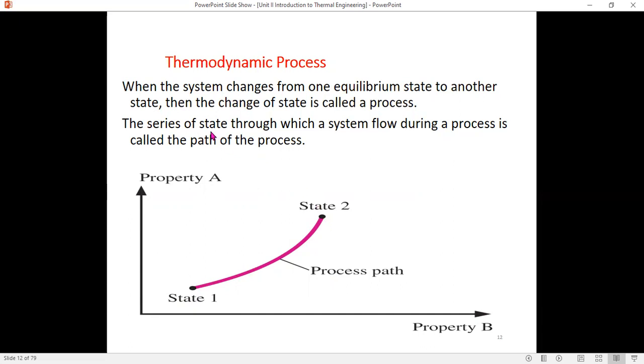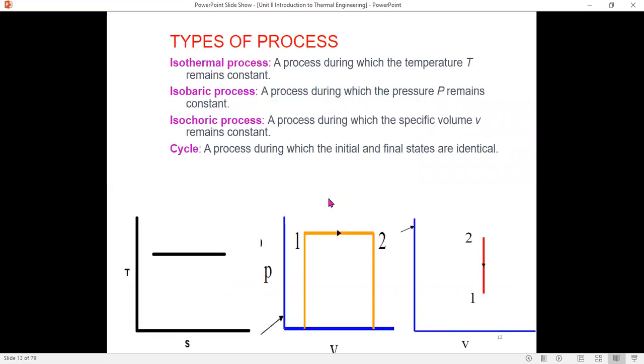The series of states through which a system flows during a process is called the path. You can see here how the process path connects the states. When a system changes from state one to state two, it is a process, and the flow through those states is the path.